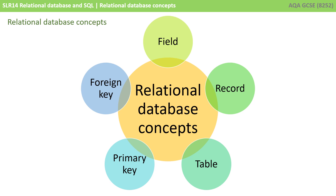On the screen now are the five relational database concepts that you need to be familiar with for the exam, and that's fields, records, tables, primary keys and foreign keys. Let's take a look at each of those now.